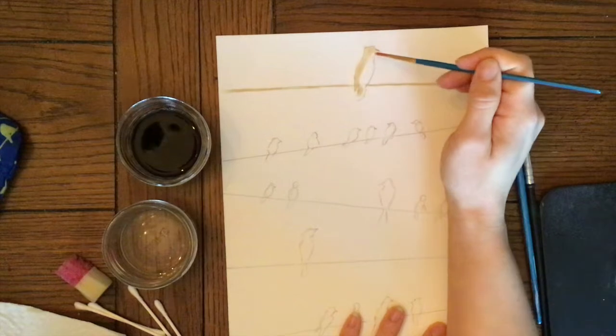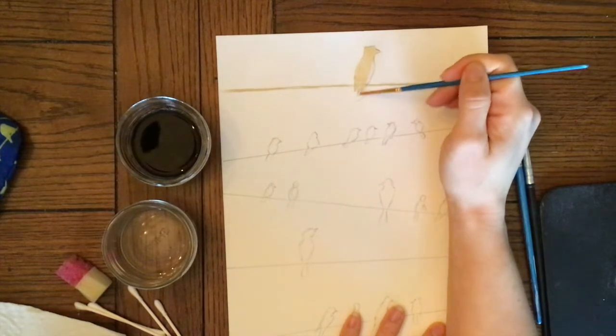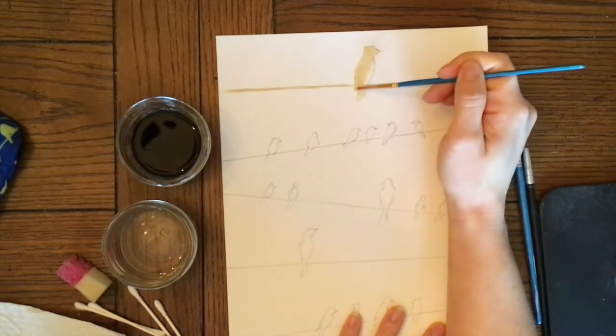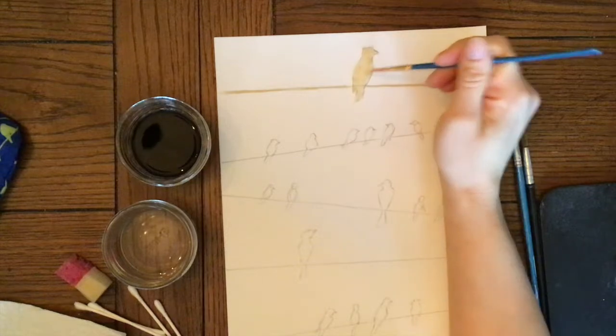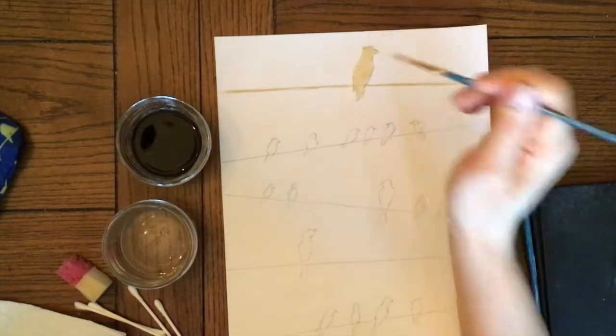If I want to make this bird a little darker, I'm gonna let it dry and do another layer on top. Let it dry first so that the paper doesn't get too wet, so it has a chance to settle into the paper. Then I can do another layer on top to make it darker.